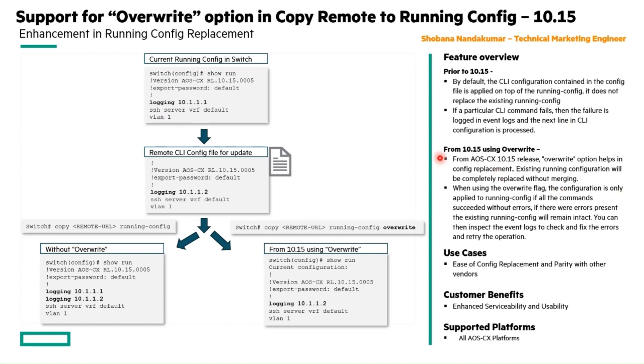You can then analyze the event logs to identify and correct any issues before retrying the operation again. Let us understand with an example here. Here is the current running configuration in the switch — I have enabled only logging with a particular IP address 10.1.1.